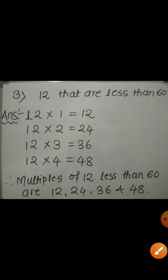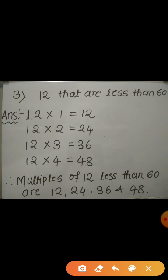Now let us see the third example. Find out the multiples of 12 that are less than 60. Now here I have started multiplying 12 by the number 1, 2, 3 and so on. Let us see what we will get. If we multiply the number 12 by 1, we get 12. 12, 1's are 12.